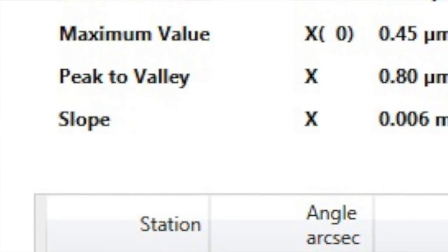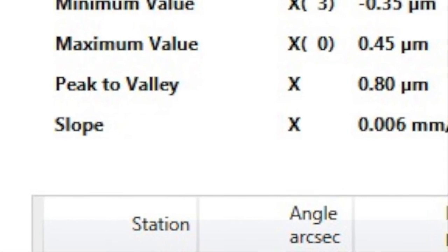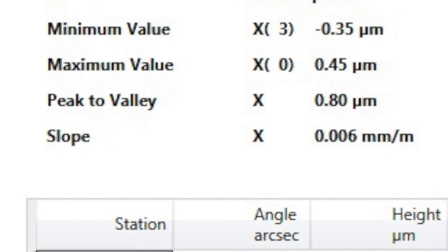In essence, we are using the slope values given to us in the straightness results to determine the squareness or parallelism.